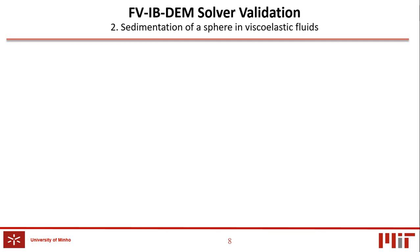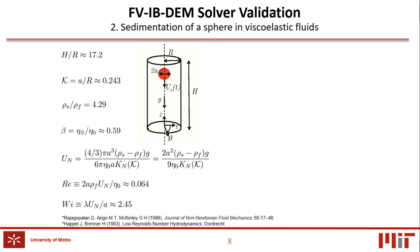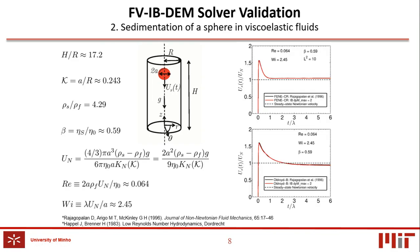The second case study employed to validate the newly implemented code was the transient settling motion of a sphere with velocity U_ST and radius A, as it falls along the centerline of a cylindrical tube of radius R, containing a viscoelastic fluid. The setup of this case study follows the one used by Rajagopal et al. The dimensionless Reynolds and Weissenberg numbers are computed using the Newtonian bounded particle terminal velocity U_N, which takes into account the wall's effect by using the Faxen correction factor K_N.